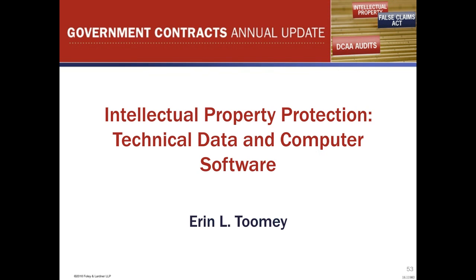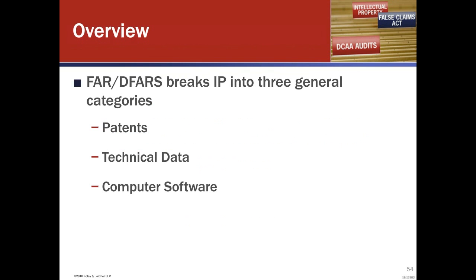The next topic is going to be our longer topic today, and it's one that is of interest to many. We're going to talk about intellectual property protection with a focus on technical data and computer software. Under government contracting rules, the FAR and the DFAR break intellectual property into three main categories: patents and inventions, technical data, and computer software.